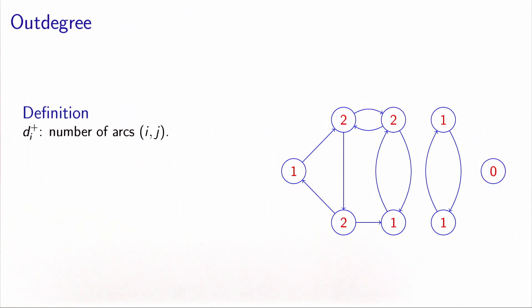We can define the out-degree in a similar way. It will be denoted by d_i^+. Here it's the number of arcs that go out of i. This node has an out-degree of 1 because there is one outgoing arc. This node has an out-degree of 2 because there are two outgoing arcs. This node has an out-degree of 0 because no arc is leaving this node.